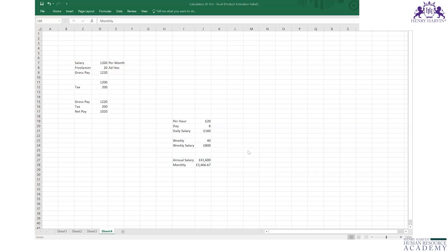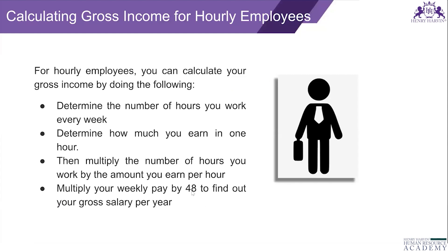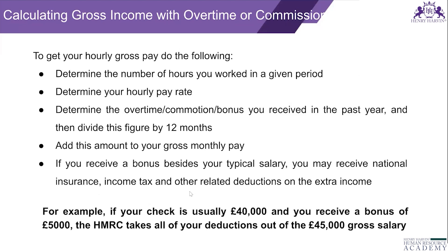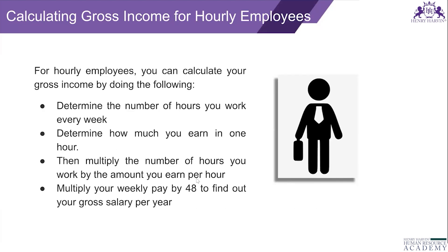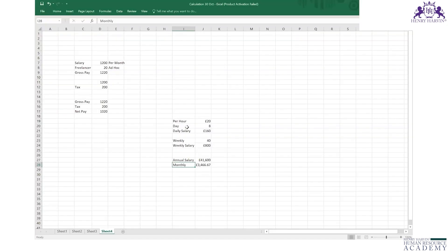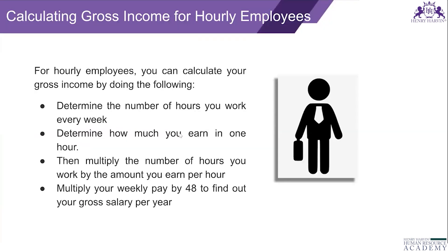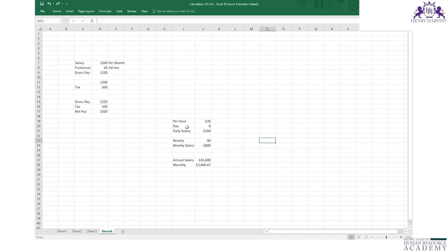The slide mentions 48 weeks, but that appears to be based on an Indian calculation — four weeks per month — which is incorrect for global payroll. The correct approach is always 52 weeks in a year. If an employee works part-time, say 20 hours instead of 40, their weekly and monthly salary will change proportionally. Always remember: 52 weeks is the global payroll standard.